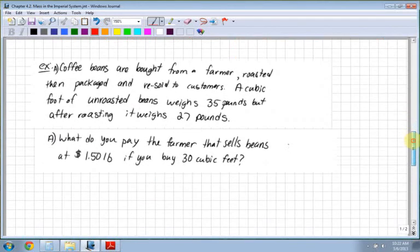Last example. Coffee beans are bought from a farmer, roasted, and then packaged and resold to customers. A cubic foot of unroasted beans weighs 35 pounds. So a cubic foot is equal to 35 pounds. But after roasting, it weighs only 27 pounds.